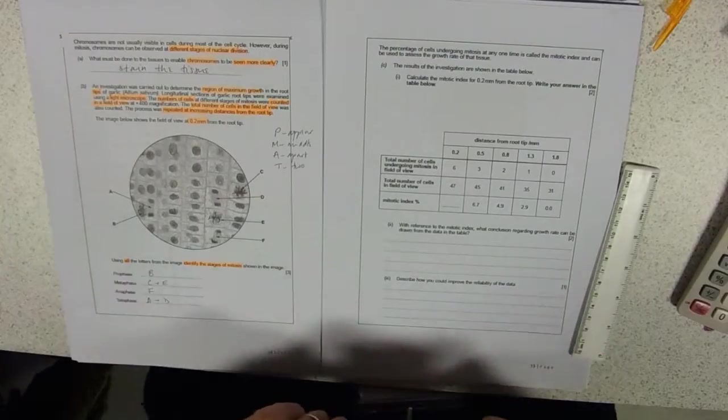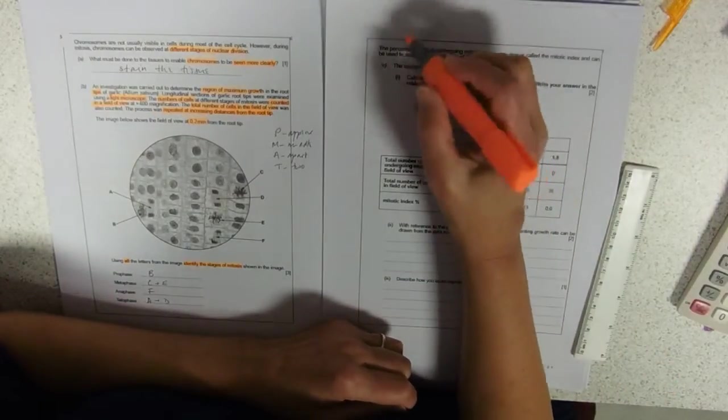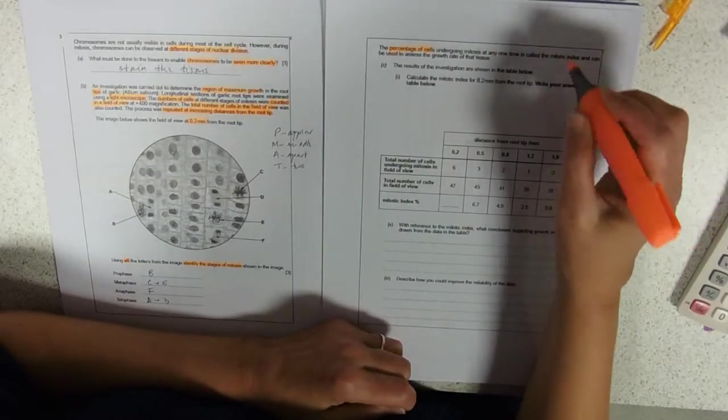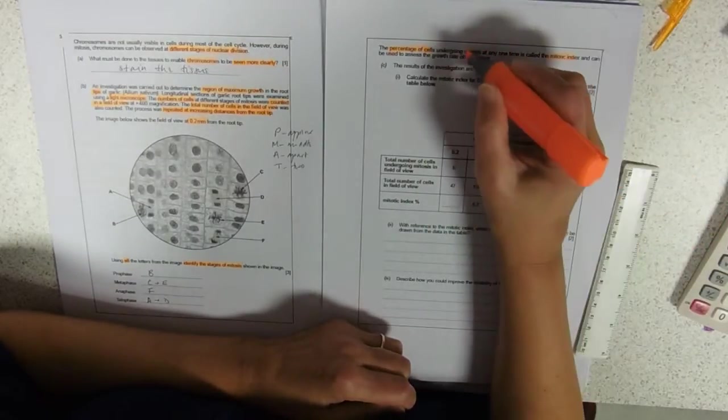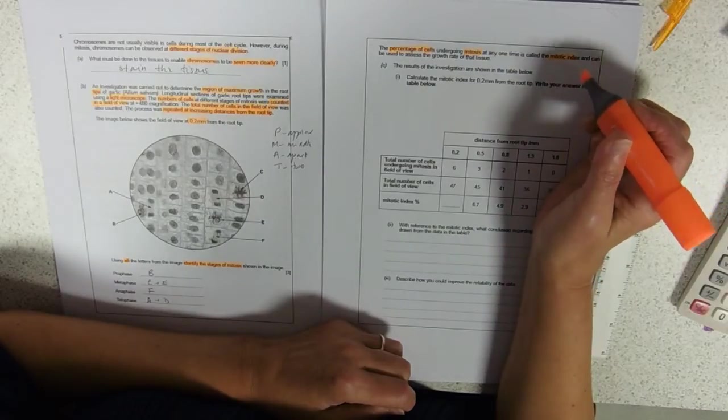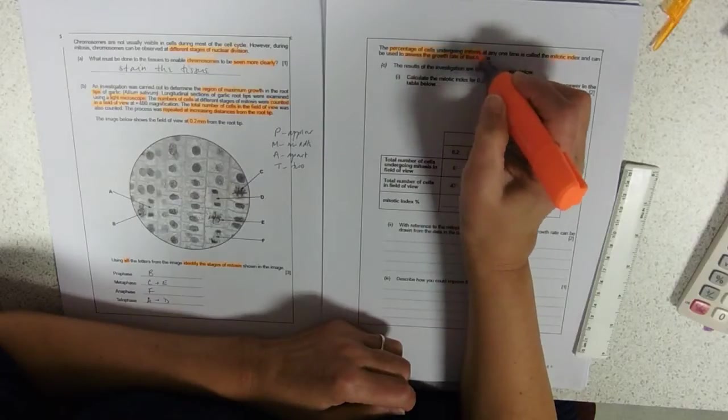So, moving on then. The percentage of cells undergoing mitosis at any one time. Here we're going to have to. The percentage of cells is the mitotic index. The percentage of cells in mitosis is called mitotic index and can be used to assess the growth rate of that tissue.